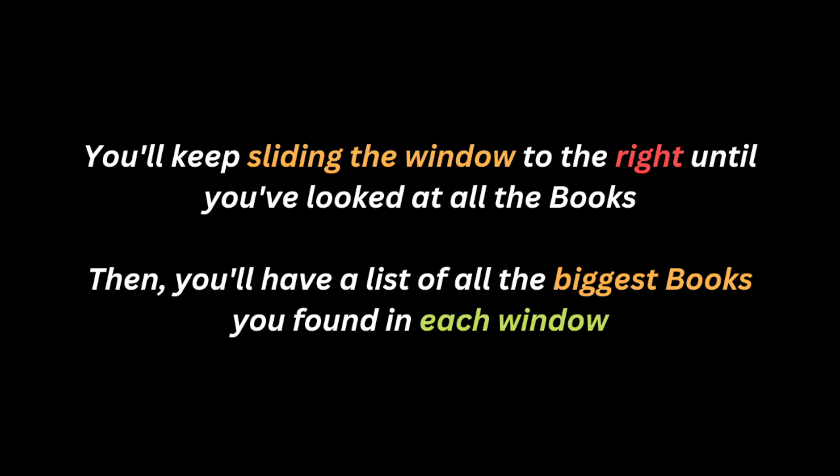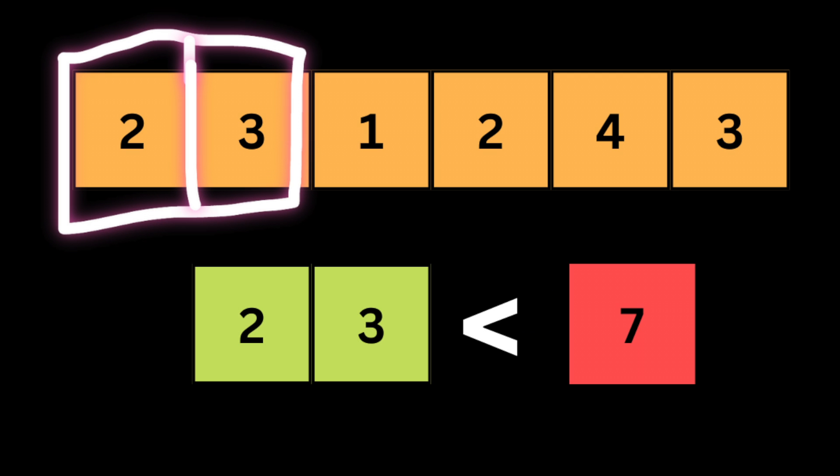Now that you have a clear picture of how the sliding window technique works, let me show you how we're going to solve this problem using this technique. Let's say we have a list of numbers and we want to find the smallest group of numbers that adds up to a certain number. The first thing we do is take a window of numbers from the list — a window is a group of adjacent numbers. For example, we take two and three and check their sum.